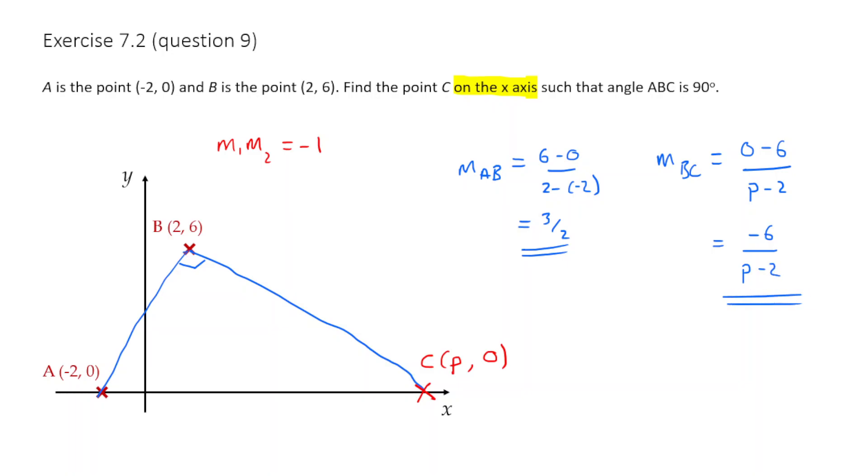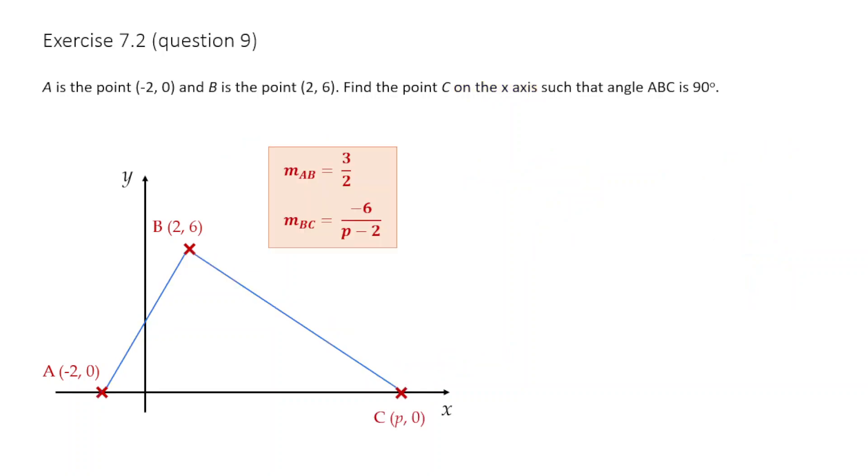So to clarify, this is what we've got. We've calculated our two gradients, MAB and MBC. And now we're just going to use the relationship between them. Because they're perpendicular, we know that their product, that is MAB times by MBC, must be equal to negative 1. And so what we get here is 3 upon 2 times by minus 6 over p minus 2 should equal negative 1.